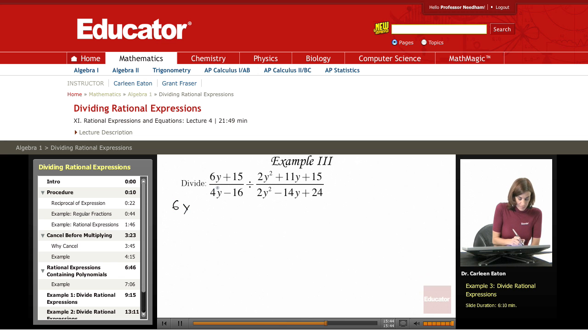Rewriting this first expression times the reciprocal of the second expression. So the denominator is going to become the numerator: 2y squared minus 14y plus 24 divided by, this numerator is going to the denominator, so flipping those two around, 2y squared plus 11y plus 15.